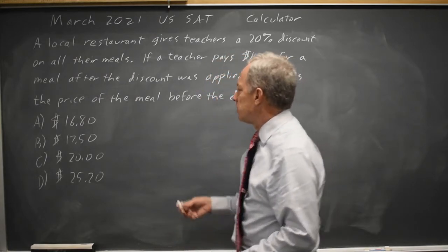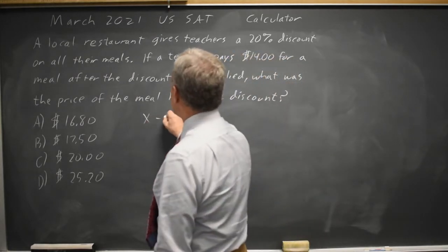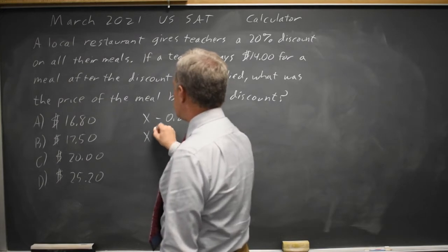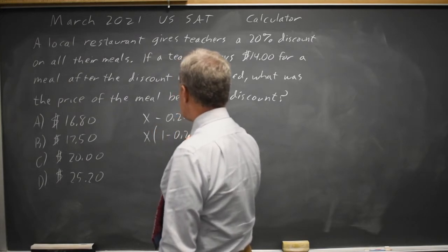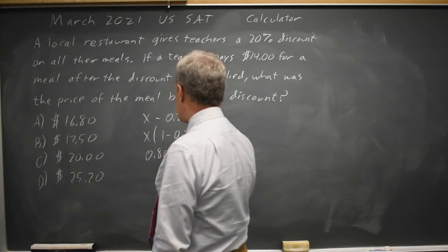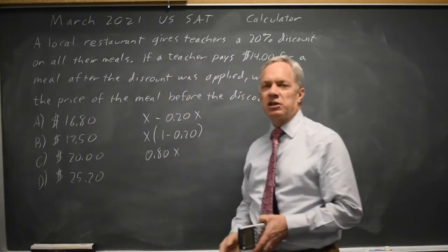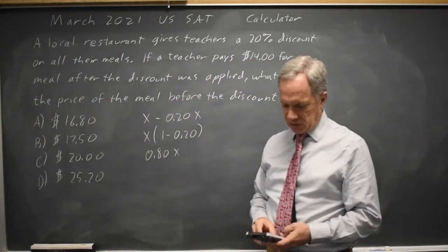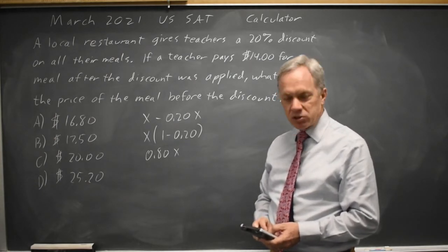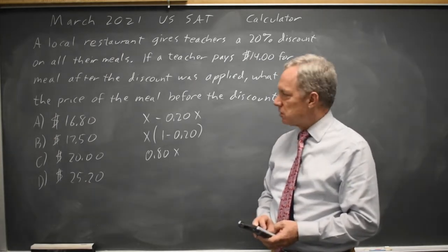So if you take a price minus 20% of the same price, that's your price times 1 minus 0.20, which is 0.80 times your price. So if I multiply each of these by 0.8, for $16.80 times 0.8, I get $13.44, which is too low.